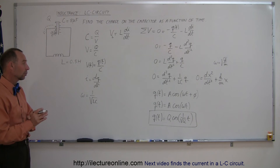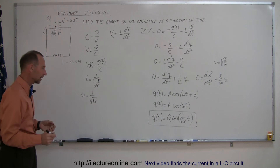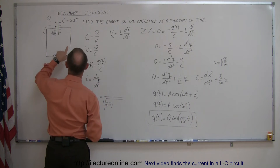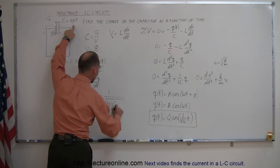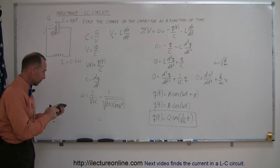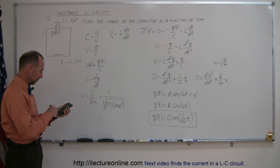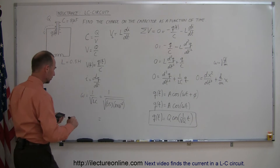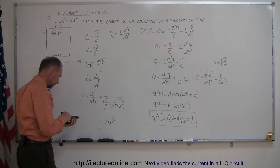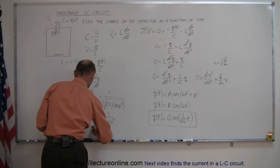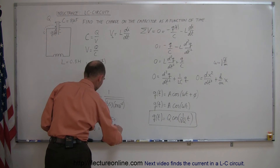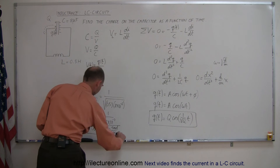Now, what is omega equal to in this case? Omega is equal to one over the square root of LC, so let's calculate that. This is equal to one over the square root of the inductance, which is 0.5, multiplied by the capacitance, which is 8 microfarads — 8 times 10 to the minus 6. That works out to one over 2 times 10 to the minus 3, and taking the inverse gives us 500 radians per second.